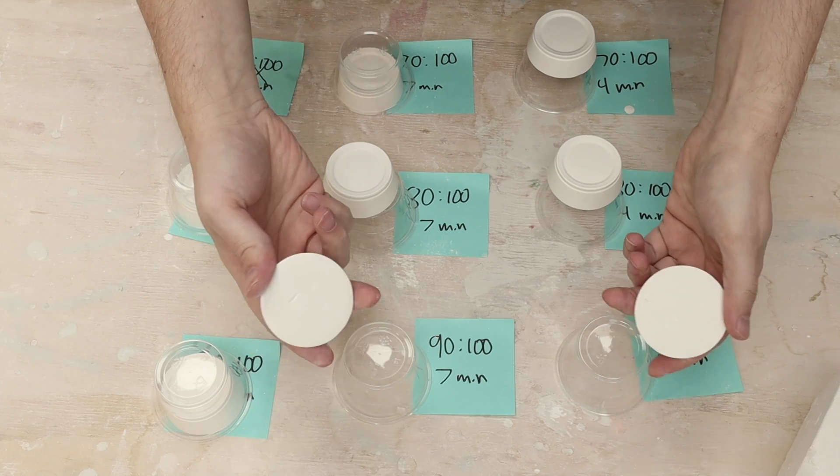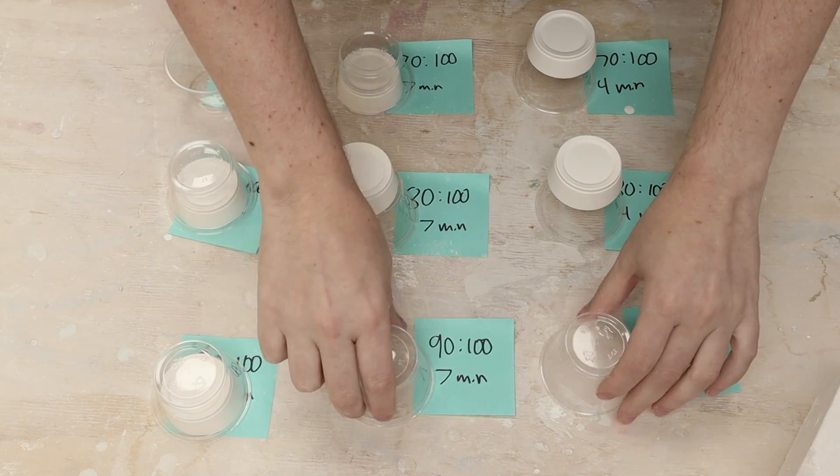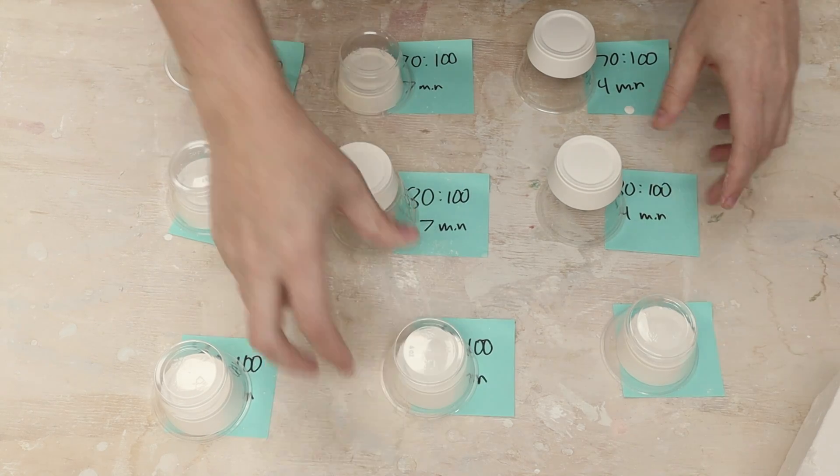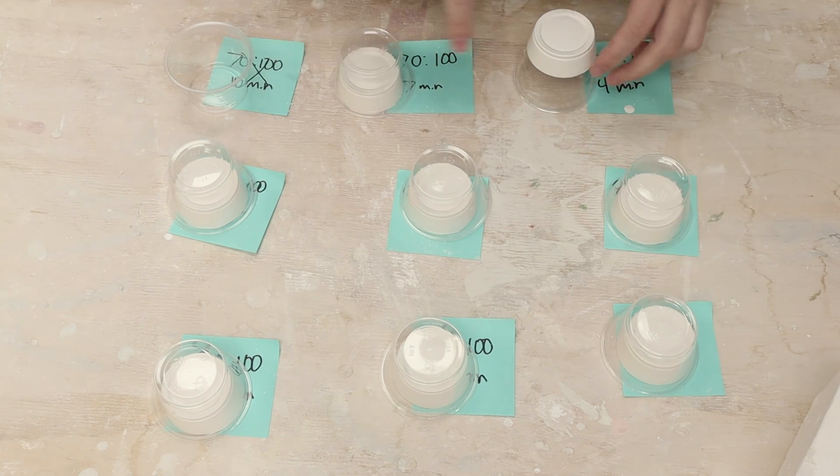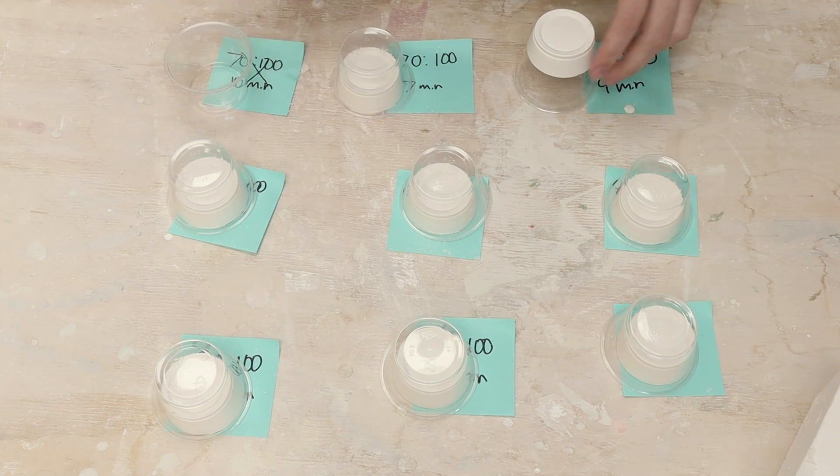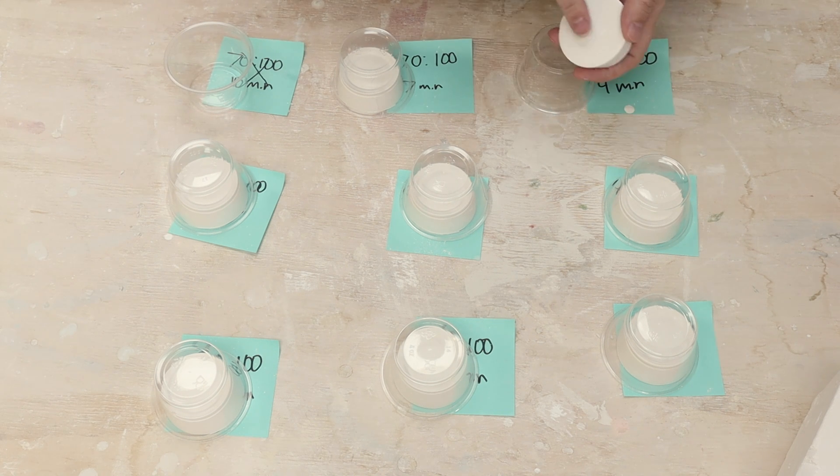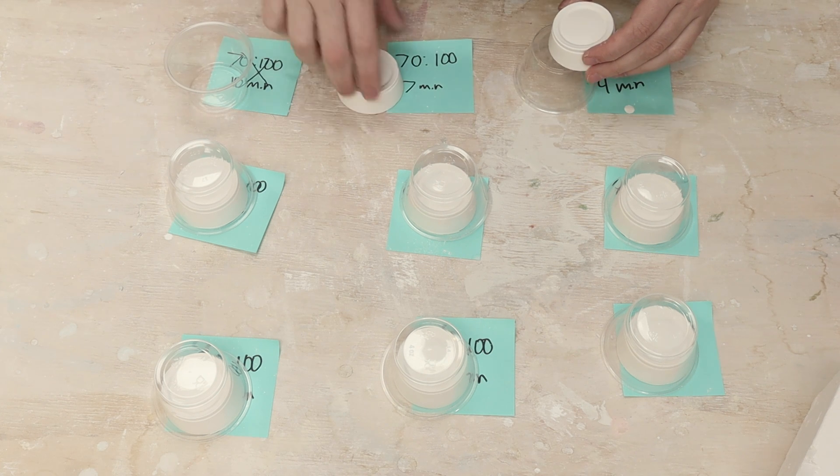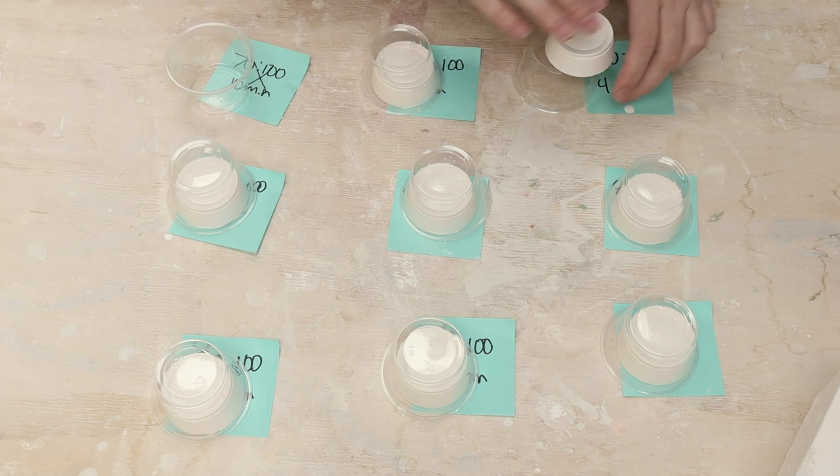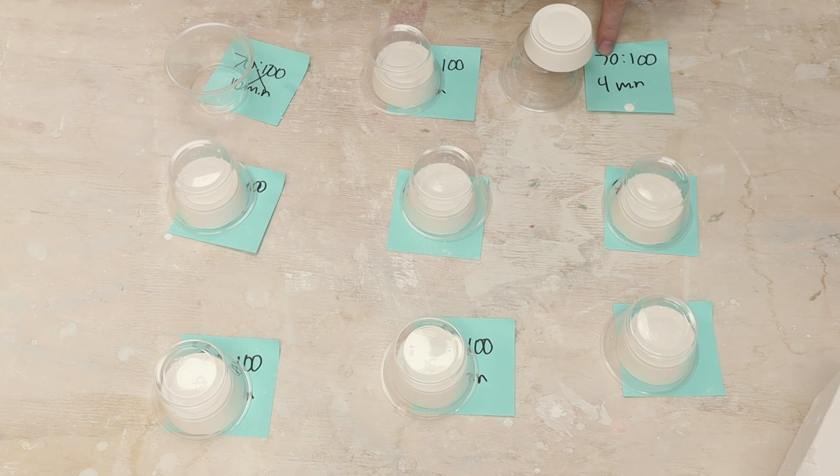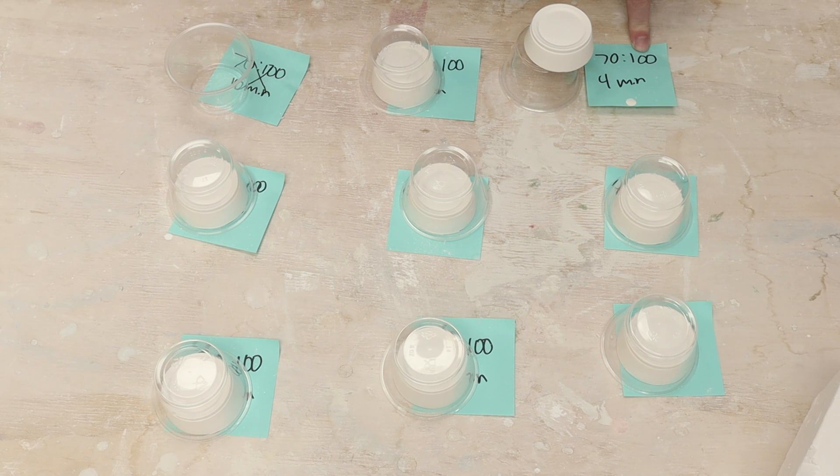All right. So both of these 90-100s, I was able to mar up relatively easily. So I would rather not use those. Likewise, for the 80-100s, I can put some marks in those. And the only one left of the 70-100 row is this one here that I mixed for four minutes. I can make some dents in it, but not much. And I don't have any bubbles, unlike this one here, where I've got a few defects in it. So I think we have a winner.